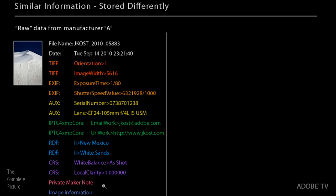So these are all things that can be stored inside a raw file. Now, let's just take a look at another one. So this would be raw data from manufacturer B. All the same information is there. The private maker note is there. The camera raw settings are there. The EXIF data is there. The keywords are there. But they're just stored in a different order.